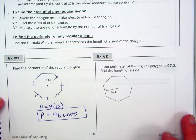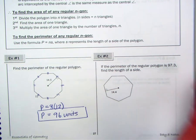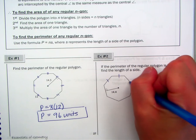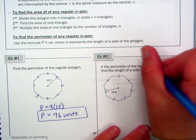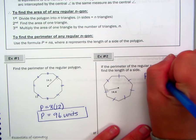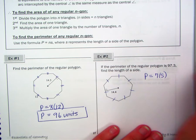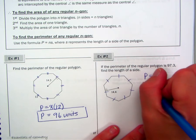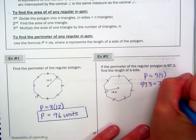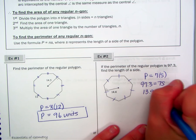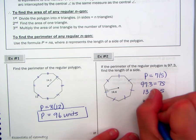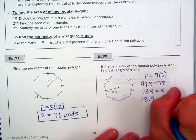And number two, it says if the perimeter of this polygon below is 97.3, find the length of a side. Well, how many sides do we have? We have one, two, three, four, five, six, seven. So we knew that to find the perimeter, we had to take seven and multiply it by the side length. So if I replace the perimeter of 97.3, we can solve for the side length S. Divide by seven and 13.9 equals S. So our answer is 13.9 units.